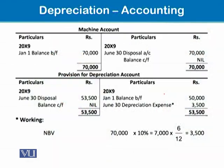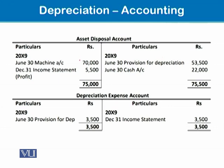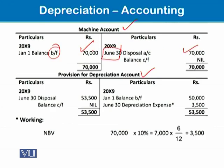The rate is 10%. The machine account and provision for depreciation account are in front of us. The machine account has a $70,000 opening balance, and we are disposing of it on 30th June to the asset disposal account. The opening balance of the provision for depreciation or accumulated depreciation is $50,000 on the credit side.